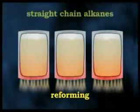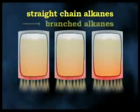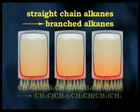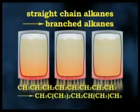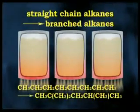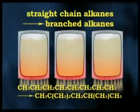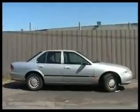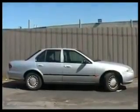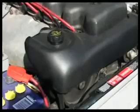Reforming involves the breaking of straight chain alkanes into branched alkanes. The branched chain alkanes in the 6 to 10 carbon atom range are preferred as car fuel. These alkanes vaporise easily in the engine's combustion chamber without forming droplets, and are less prone to premature ignition, which affects the engine's operation.